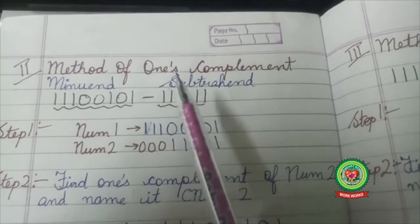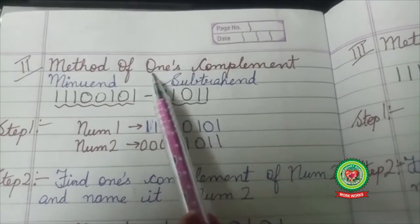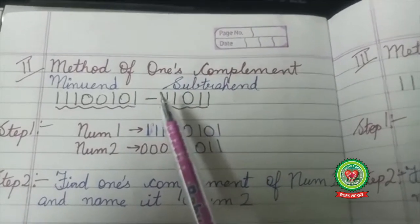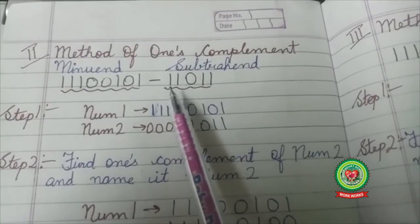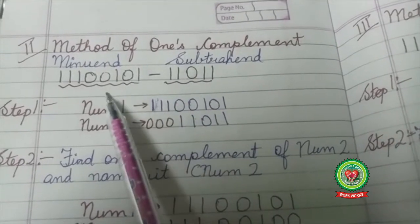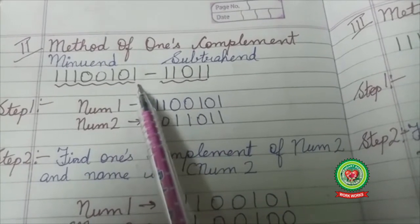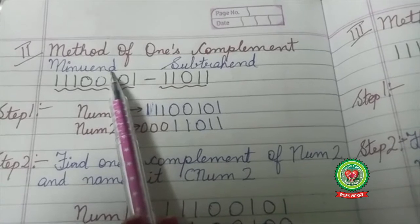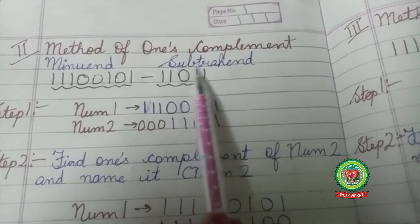Students, now let's understand the method of one's complement for subtraction. I have to subtract 11011 from 11100101. My first number is minuend and my second number is subtrahend.